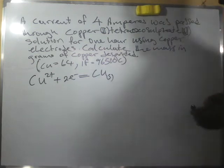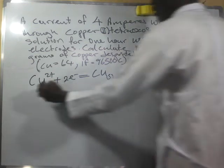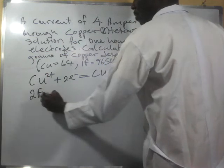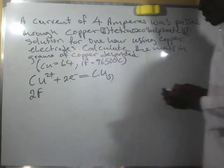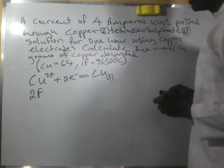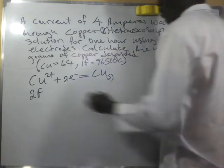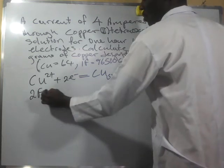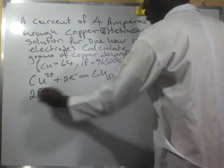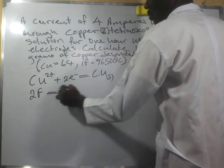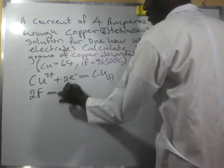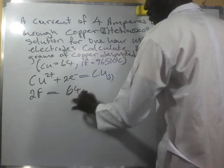It then means that to deposit one mole of copper, or 64 grams of copper, will be equal to two Faradays. Two Faradays will deposit 64 grams of copper.